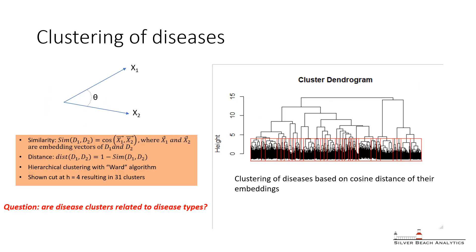We analyzed embeddings of selected terms for over 3,500 human diseases for which gene-disease associations are available in the GNET database. Our first question was: do diseases form meaningful clusters in the embedding space from which disease types could be reconstructed? We defined a measure of disease similarity as the cosine between embedding vectors and performed hierarchical clustering of the resulting disease-disease distance matrix.